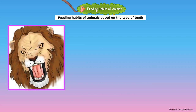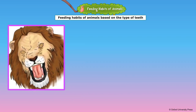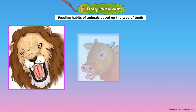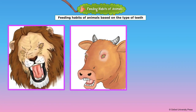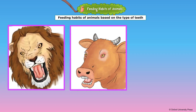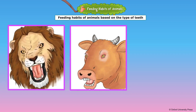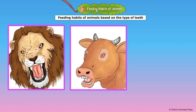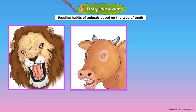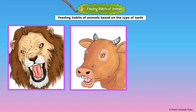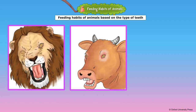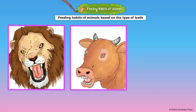Flesh-eating animals such as tigers and lions have long, sharp, and pointed teeth to tear out flesh. They have grinding teeth at the back to chew the meat. Grass-eating animals such as cows, buffalos, horses, and goats have sharp, flat front teeth to cut the grass and leaves of plants.